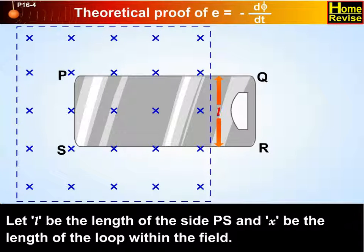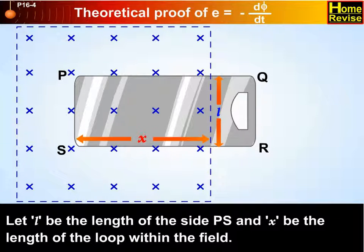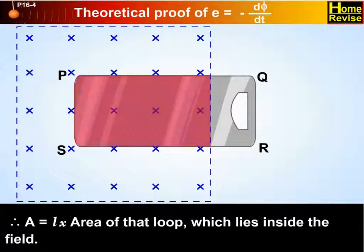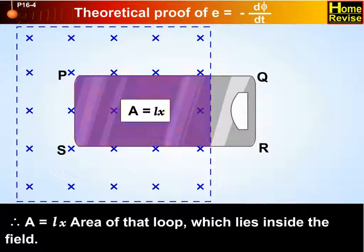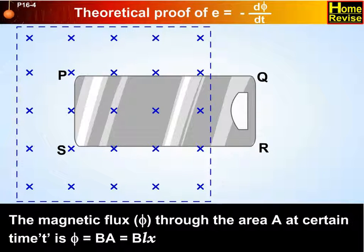Let L be the length of side PS and x be the length of the loop within the field. Therefore, A equals Lx, that is the area of the loop which lies inside the field. The magnetic flux through the area A at certain time t is phi. Phi equals BA, that equals BLx.